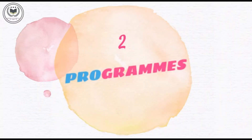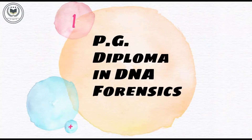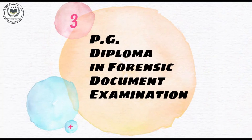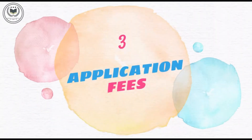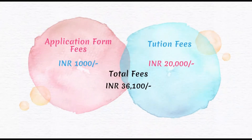Program: PG Diploma in DNA Forensics, PG Diploma in Fingerprint Sciences, PG Diploma in Forensic Document Examination. Application Fees: The application fee is Rs. 1,000, while the tuition fee is Rs. 20,000. Including some other university contributions and extra fees, the total fees of the first semester is Rs. 36,100.